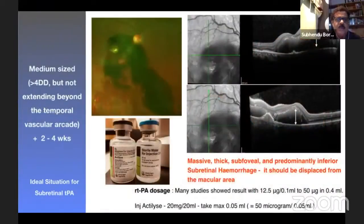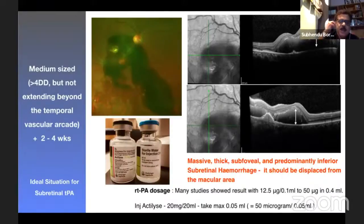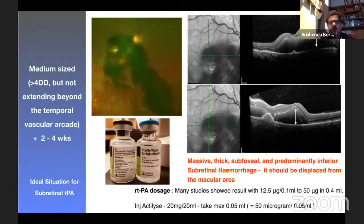For medium size hemorrhage — more than 4 disc diameters but not extending beyond the temporal vascular arcuate — with a duration of two to four weeks, the role of TPA comes in. Many studies have already shown that subretinal TPA has definite advantages over intravitreal TPA. This picture shows the ideal scenario: the height of the hemorrhage is just above the fovea, which is the most ideal situation for subretinal TPA injection.